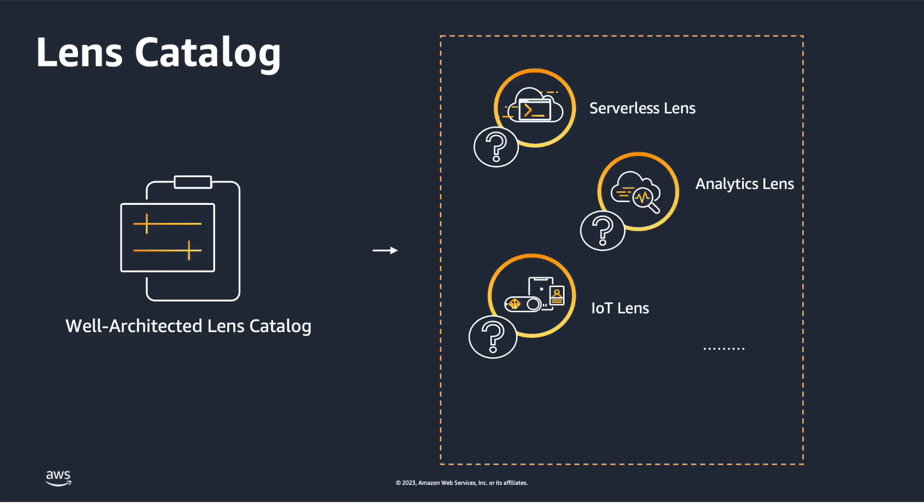To help you achieve this, the new Lens Catalog feature in the Well-Architected tool allows you to explore and implement the latest technology and industry-focused best practices from AWS. You can now access numerous AWS author lenses in the catalog — for example, Serverless Lens, Analytics Lens, and IoT Lens.